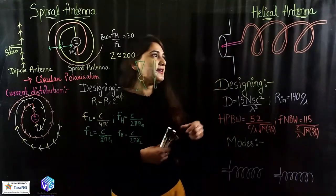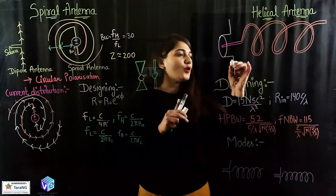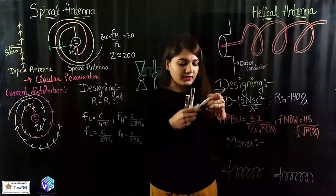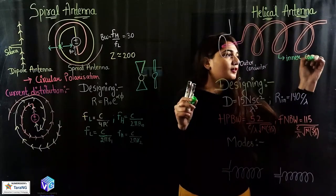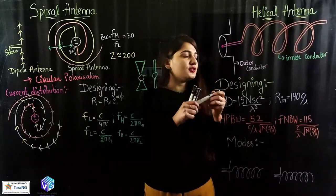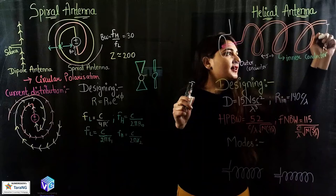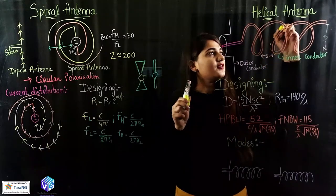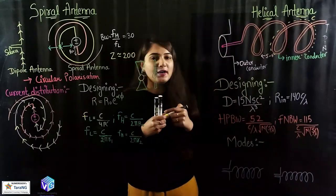Now coming to the helical antenna. The helical antenna has a structure like this: we have a coaxial cable — this is the outer conductor. We are turning the outer conductor at an angle of 90 degrees and this is my inner conductor, which is turned in the form of a spring. This forms the helical antenna. S is the spacing between the two turns, N is the number of turns, and we have the diameter from which we can find out the circumference of a single turn.